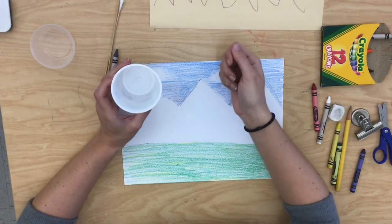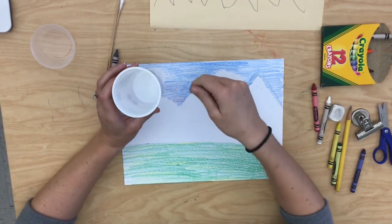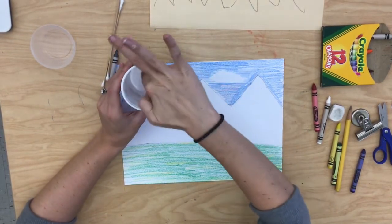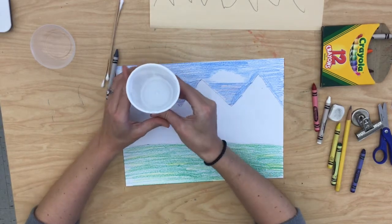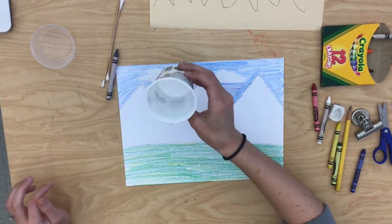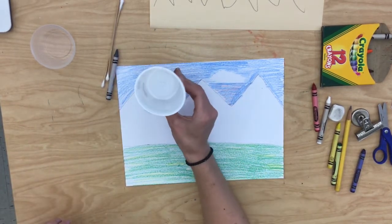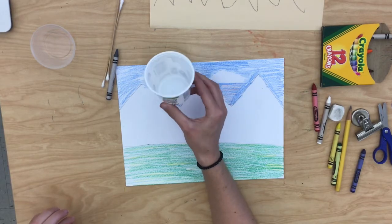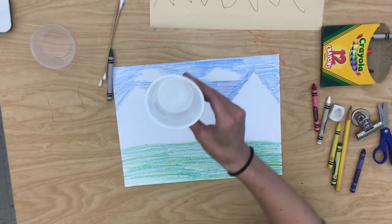You only need about two spoonfuls. So if you had a spoon with you, you would put two little spoonfuls inside your cup. And then we're going to add some water to it in order to make it kind of look like paint like the cavemen would use.